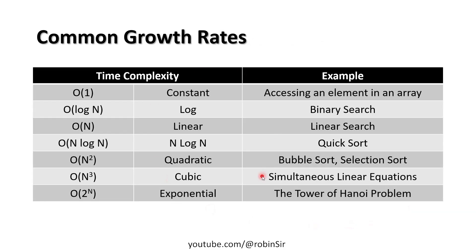Here are some common growth rates. Constant time: accessing an array element takes a fixed amount of time. Logarithmic O(log n): binary search. Linear O(n): linear search. O(n log n): quick sort. Quadratic O(n²): bubble sort and selection sort. Cubic O(n³): simultaneous linear equations. Exponential O(2ⁿ): the Tower of Hanoi problem.